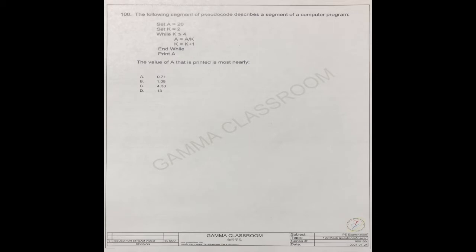The value of a that is printed is most nearly what number a, b, c, d. So to solve this question, you just need to do the calculation one by one.